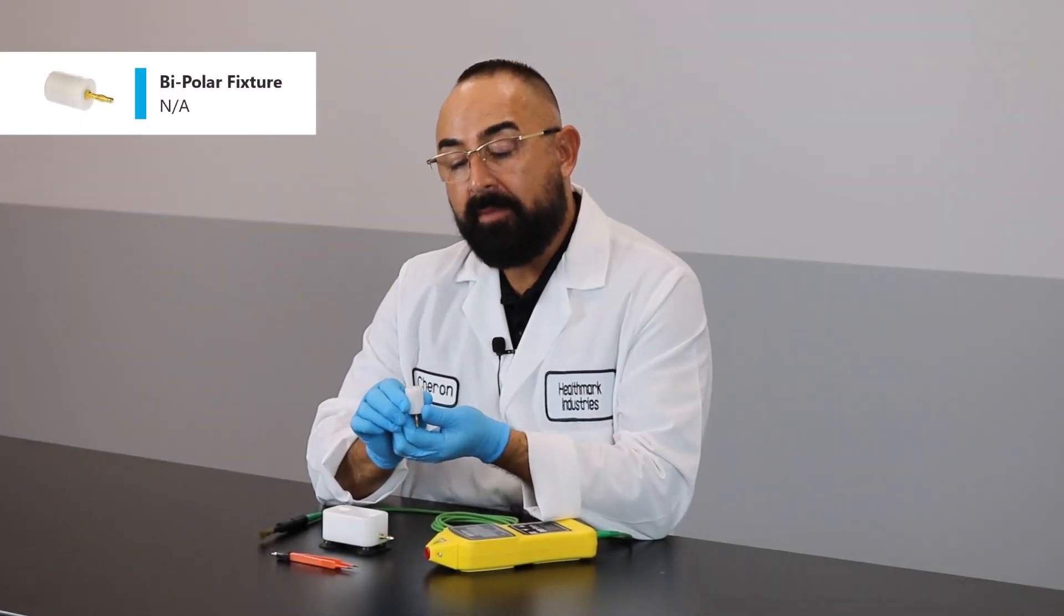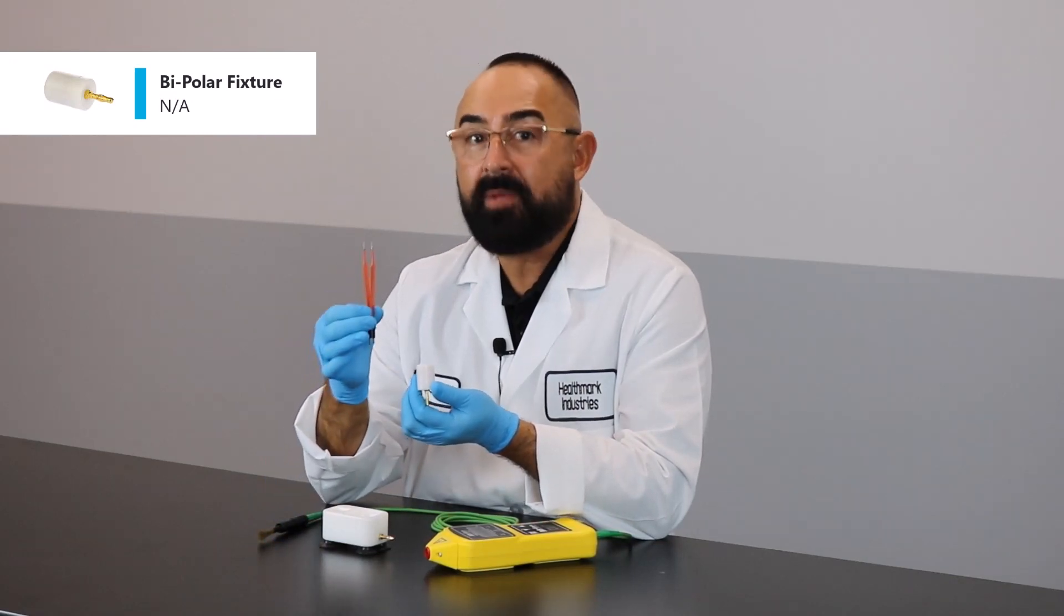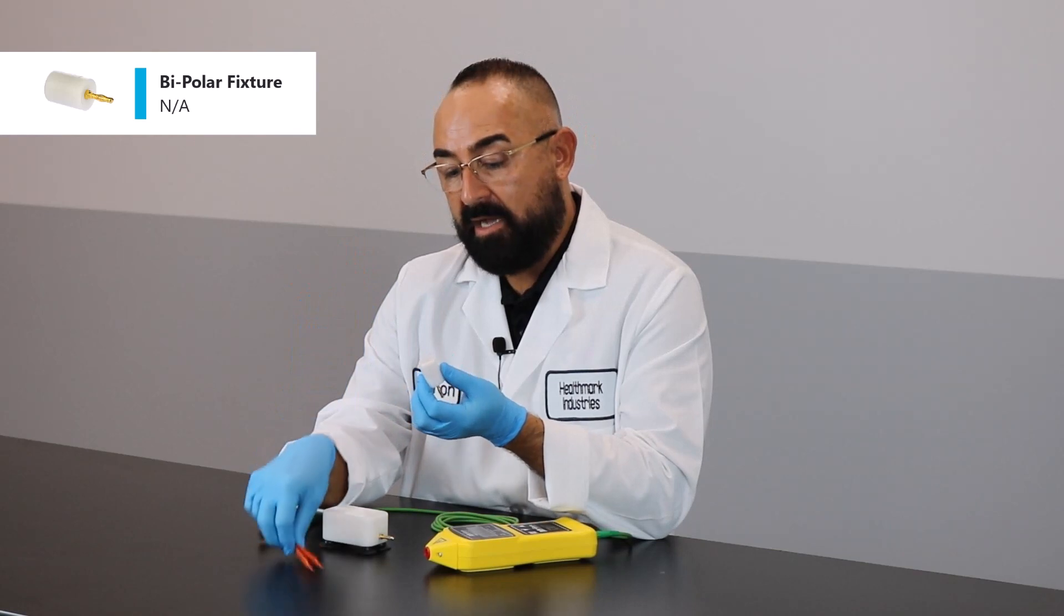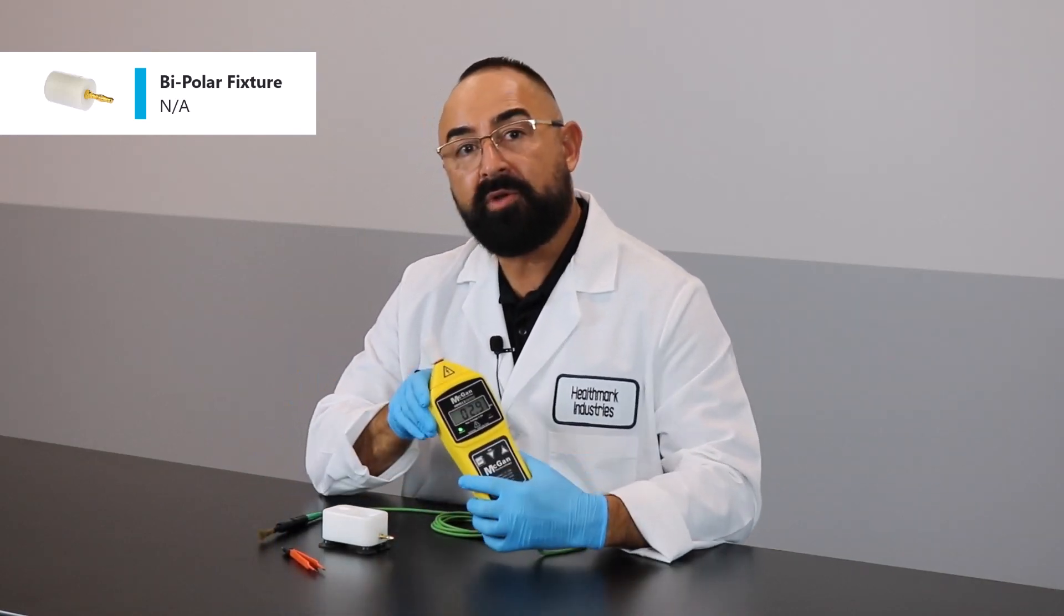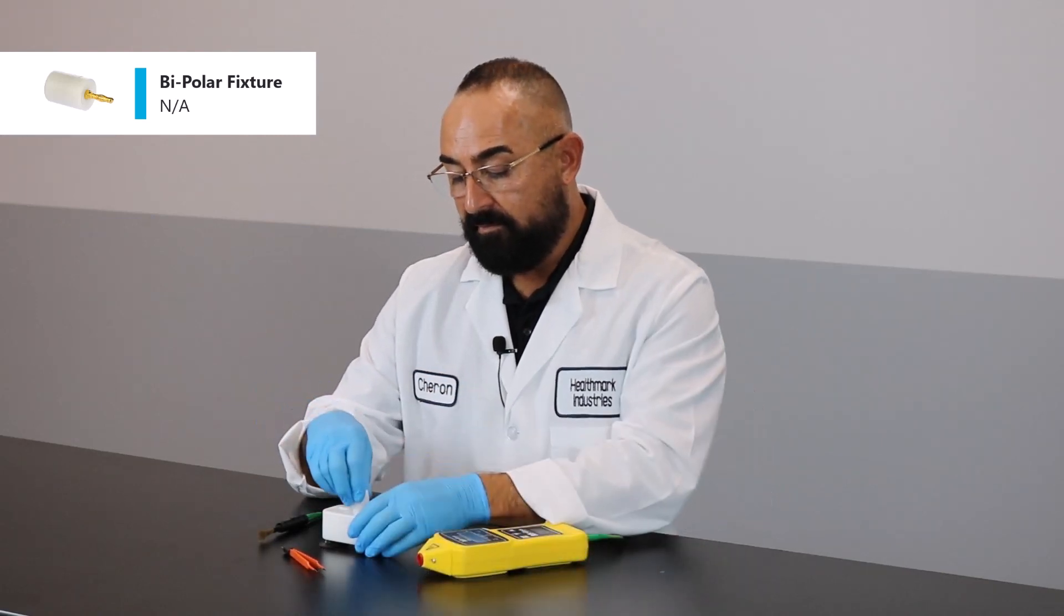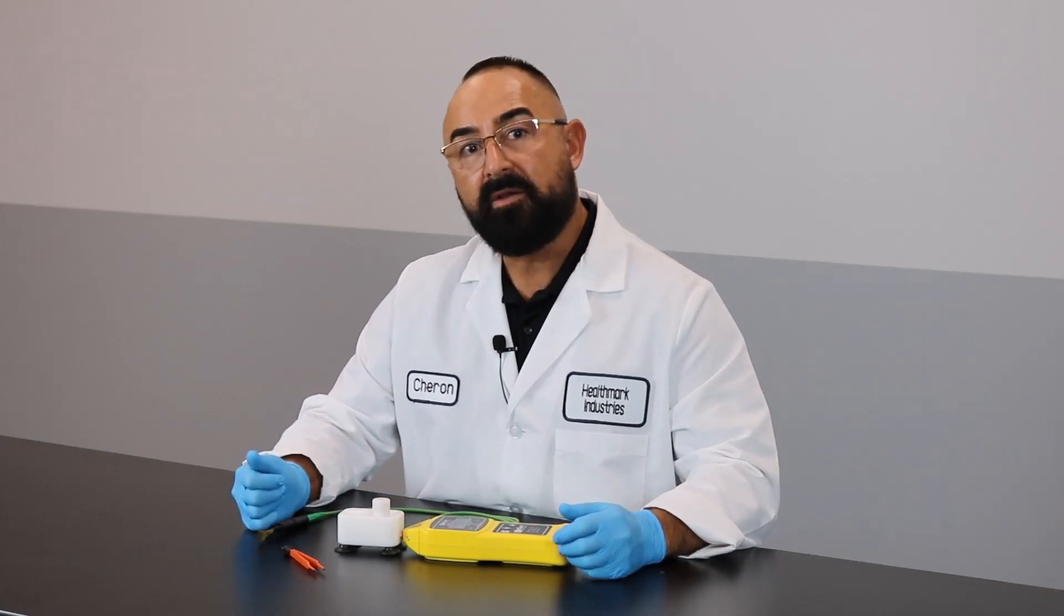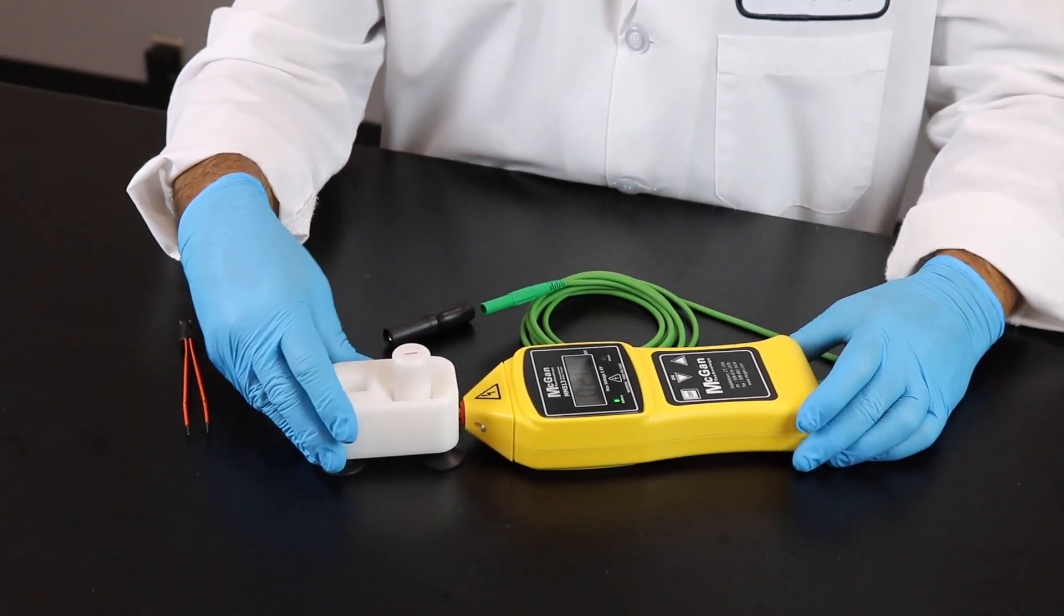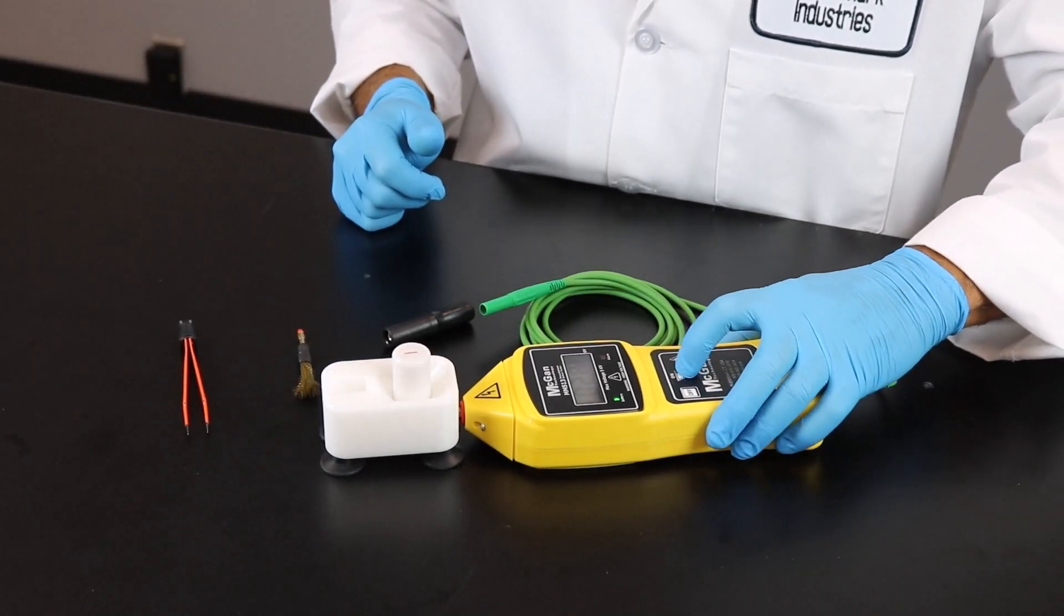With this accessory, this is called the bipolar fixture. This is used to test your insulated bipolar forceps like so. There's two ways to actually test with this specific accessory. You can put it directly into the unit itself or into the saddle block into the unit like so. After you connect the bipolar fixture to the saddle block and the saddle block into the unit, you want to set the voltage at 2.8.